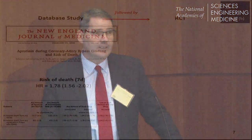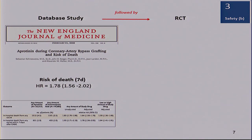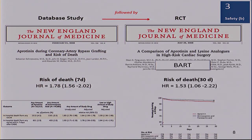Aprotinin during CABG surgery is a drug that stops bleeding. Surgeons love it. We found an increased risk of dying in those patients during hospital stays. This went to the regulators and didn't change much in the label. A few months after this was presented to regulators, the BART trial — the Canadian trial — had its aprotinin arm stopped for increased risk of death. The point estimates were actually quite comparable. This is a safety use case; we feel quite comfortable in that space.